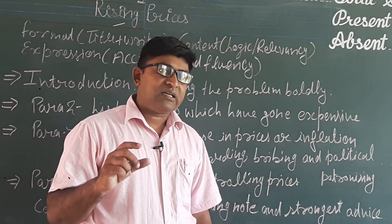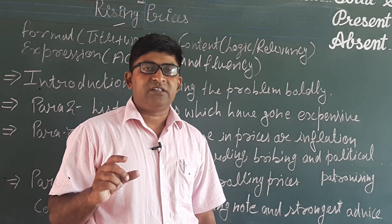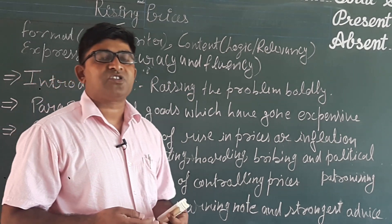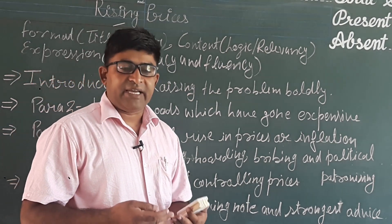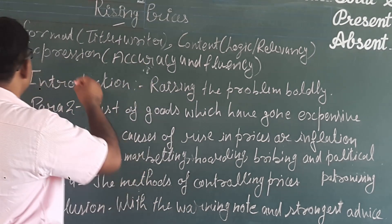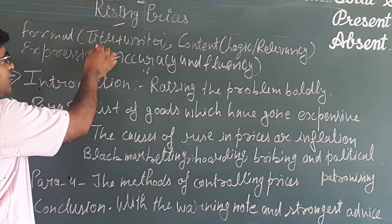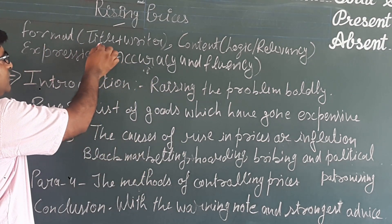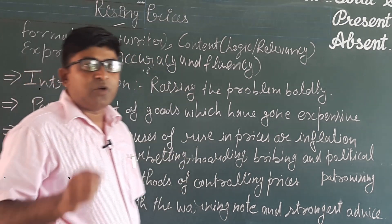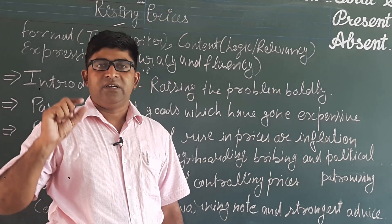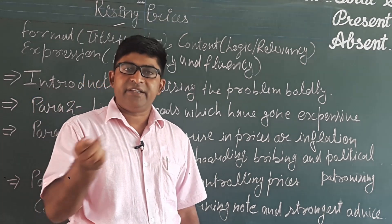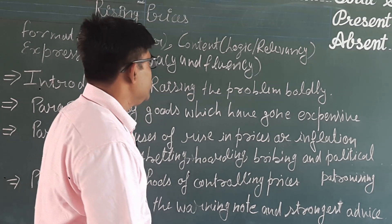There are three steps of writing the article, or you may say the criteria on the basis of which the article is assessed or evaluated. The first is format. Format includes the title and the name of the writer, and at the top of the article we shall mention the title of the article and the name of the writer.